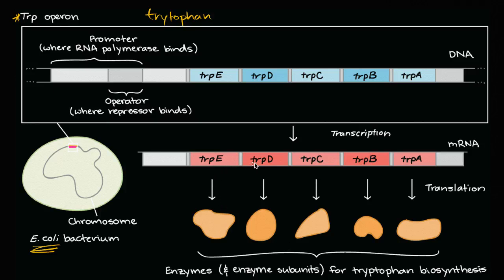And so trp E, D, C, B, A—they're all, once they are transcribed into mRNA and then translated into ribosomes, these enzymes are used to create tryptophan, for tryptophan biosynthesis.